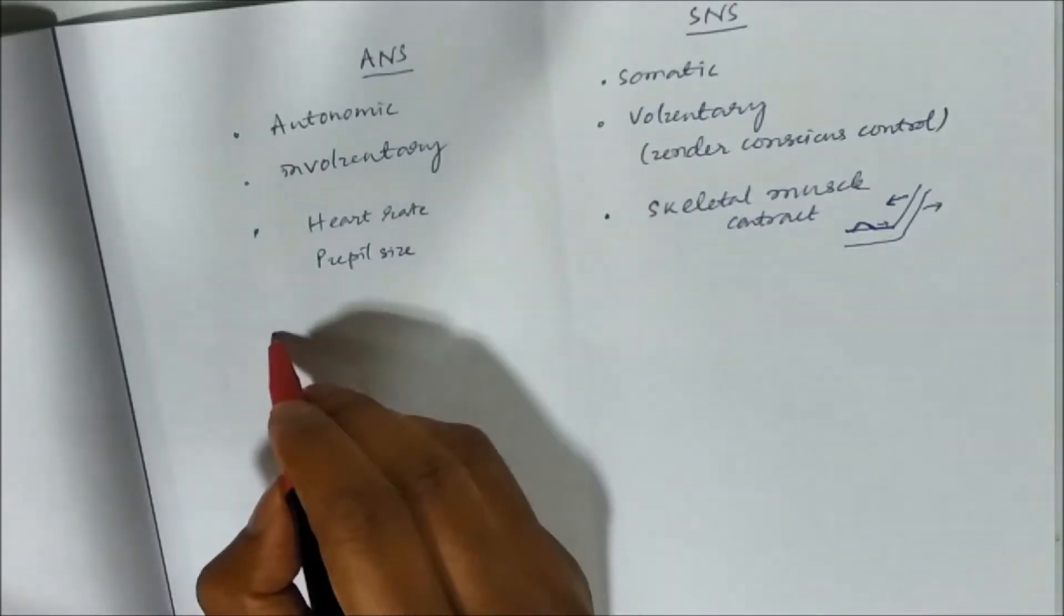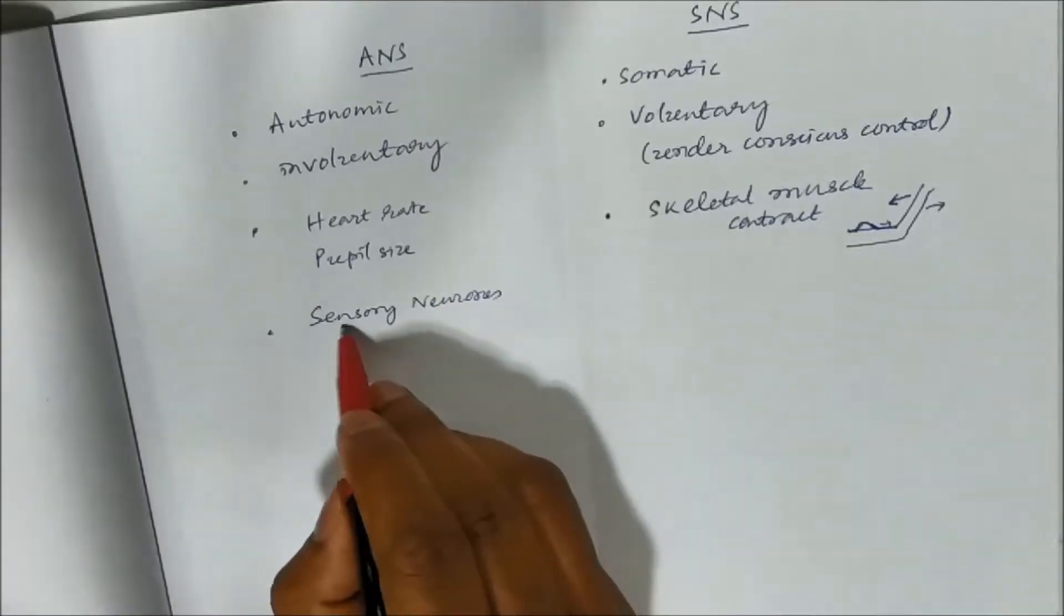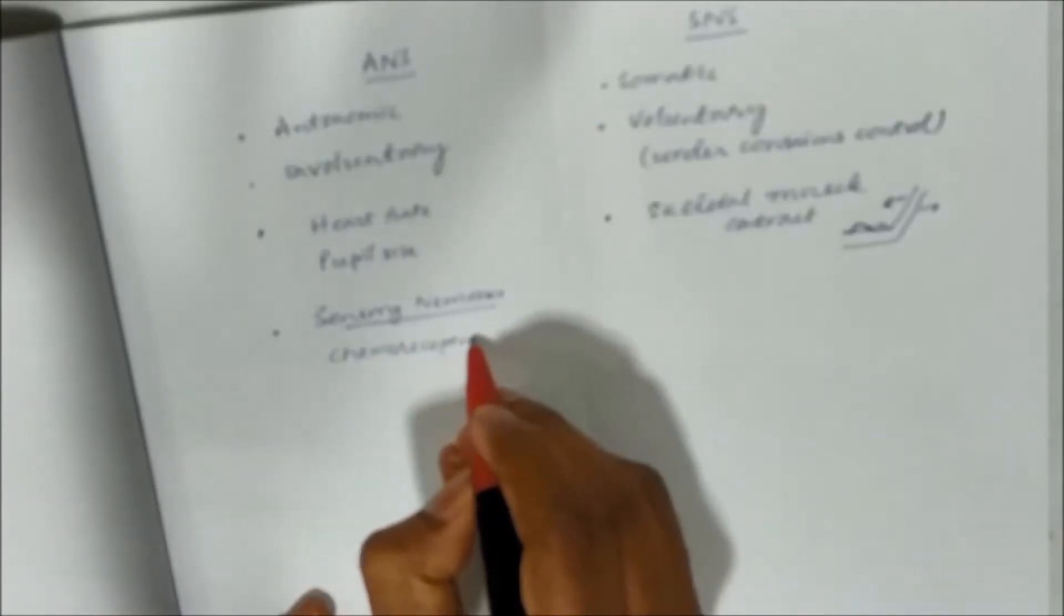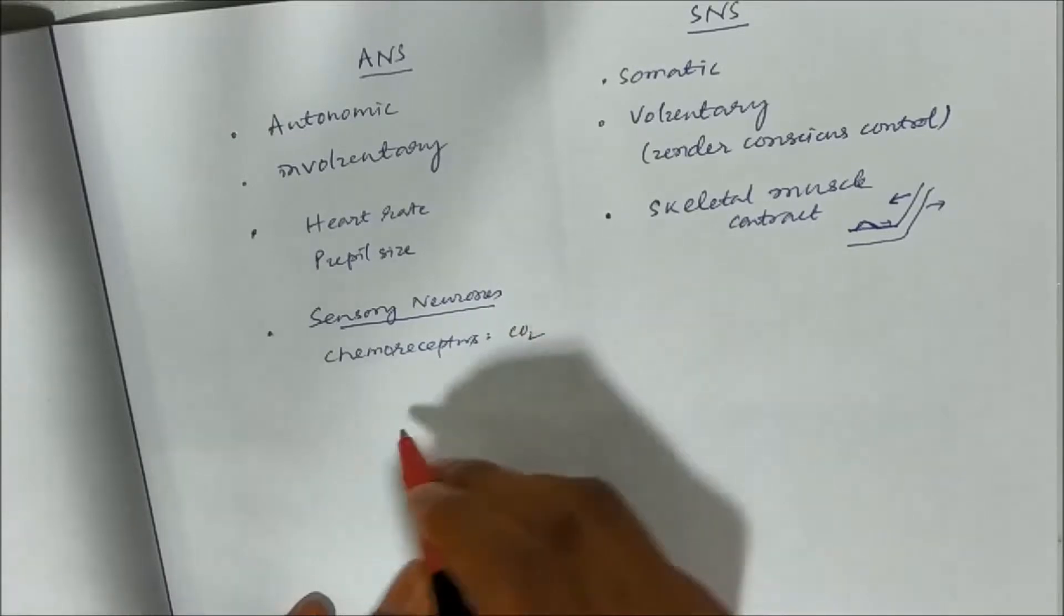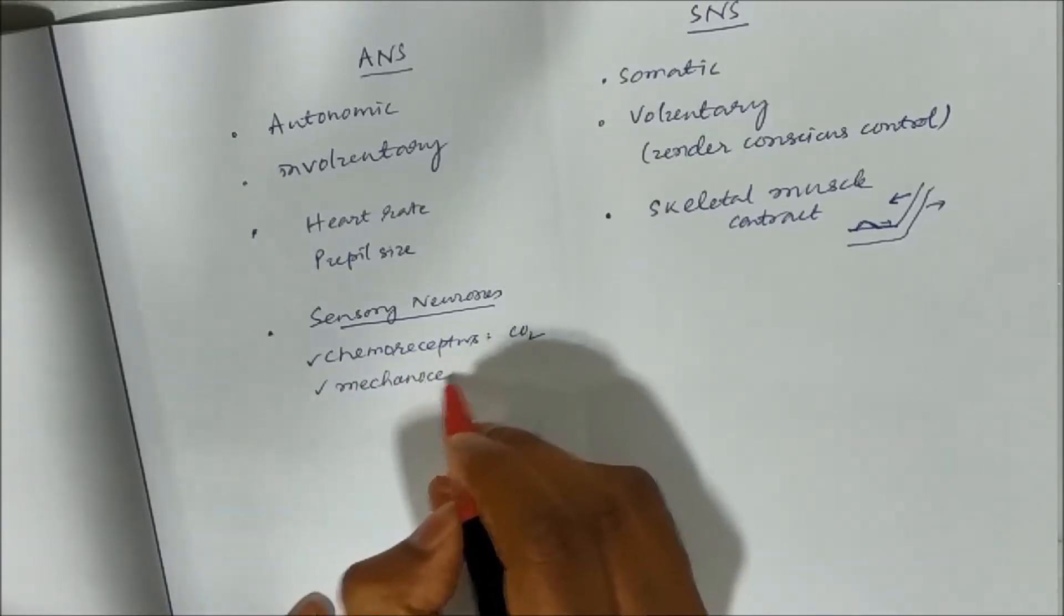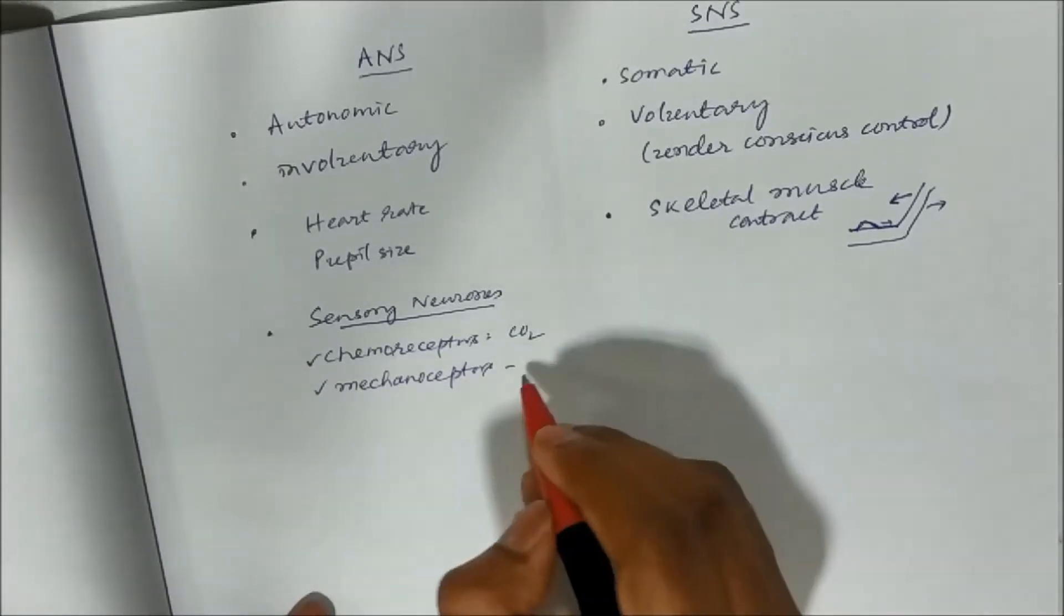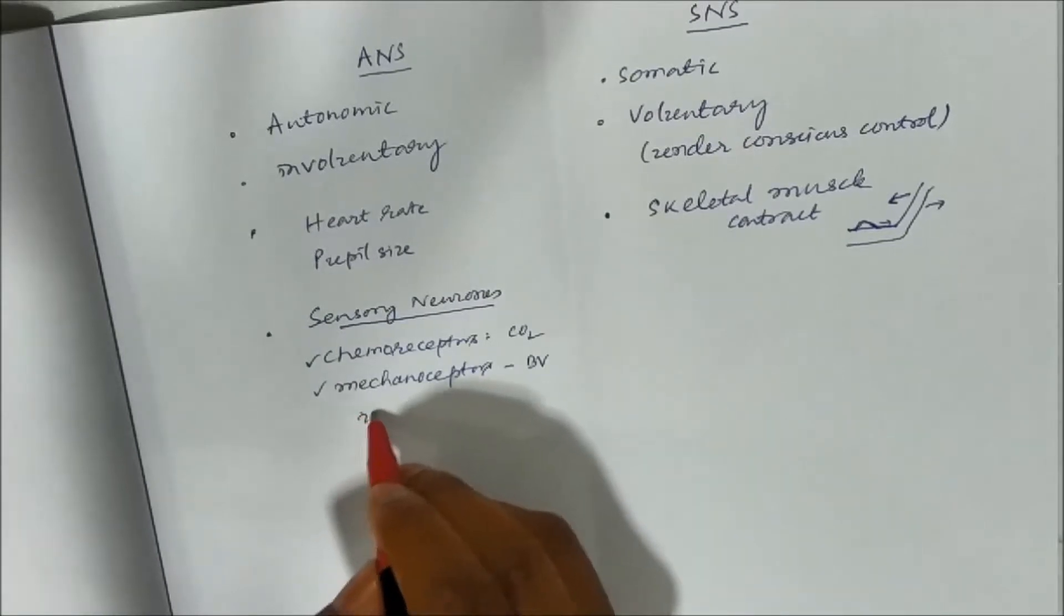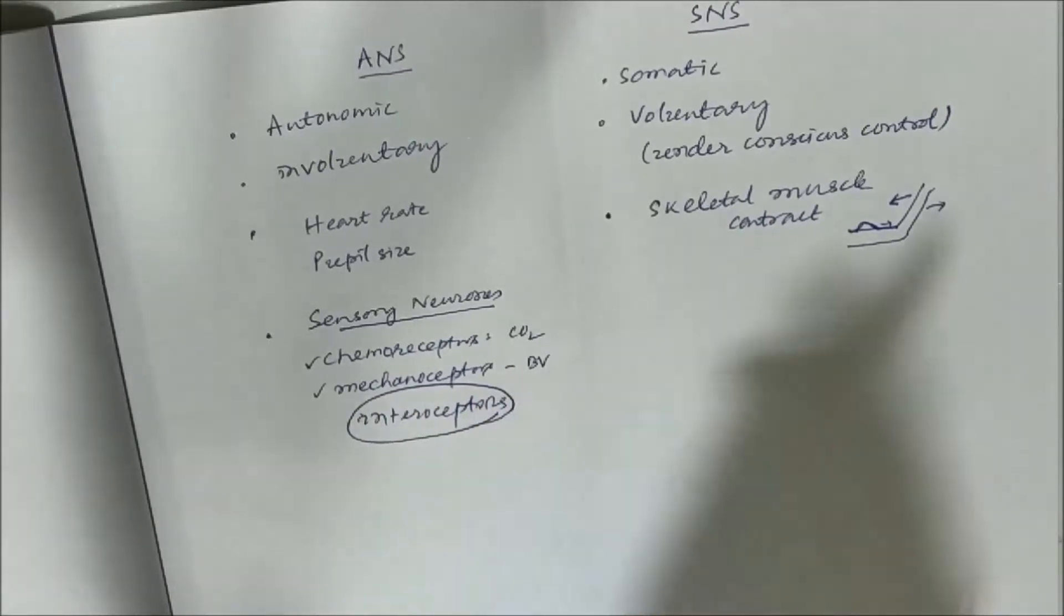Let us now discuss the sensory neurons. The sensory neurons originate from chemoreceptors, for example, the receptors which monitor the carbon dioxide level in the blood, and mechanoreceptors, which will detect degree of stretch of organs, for example, blood vessels. So these are called interoceptors. The sensory neurons originate from interoceptors.